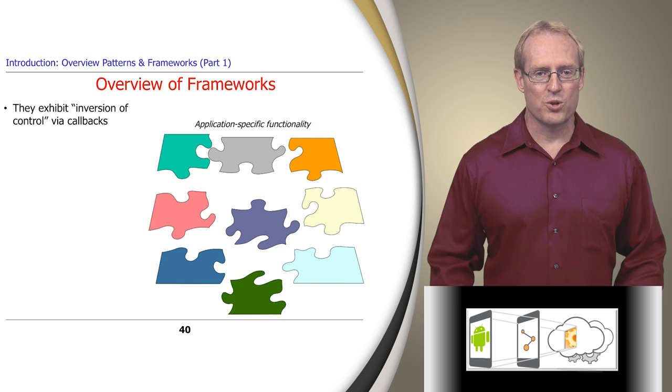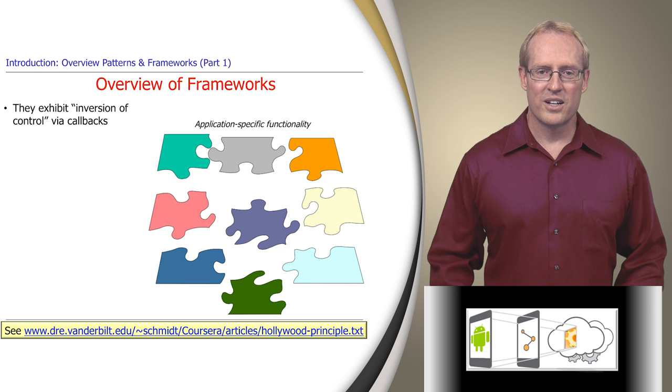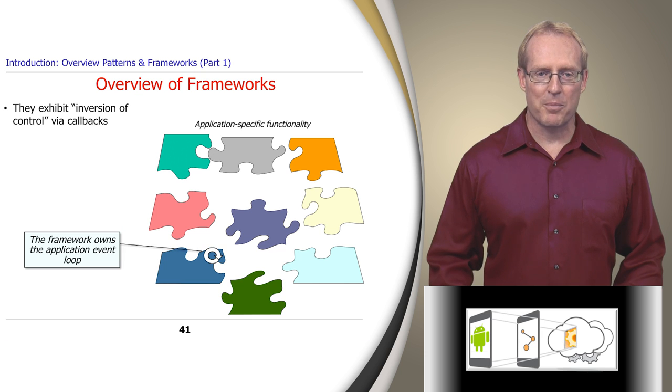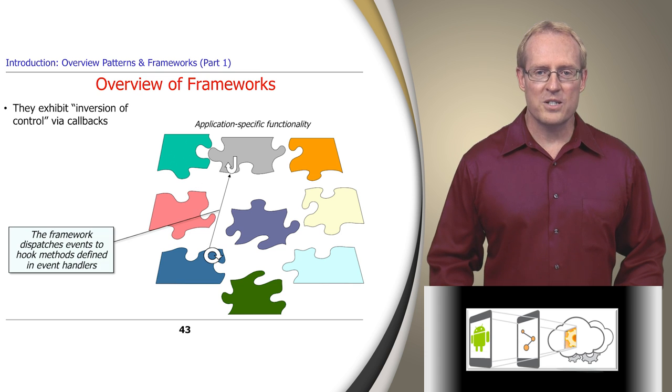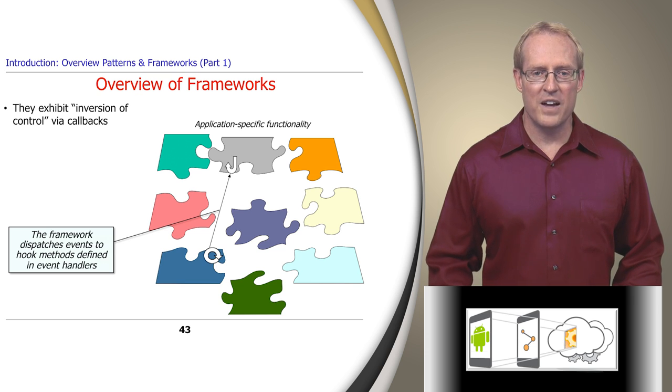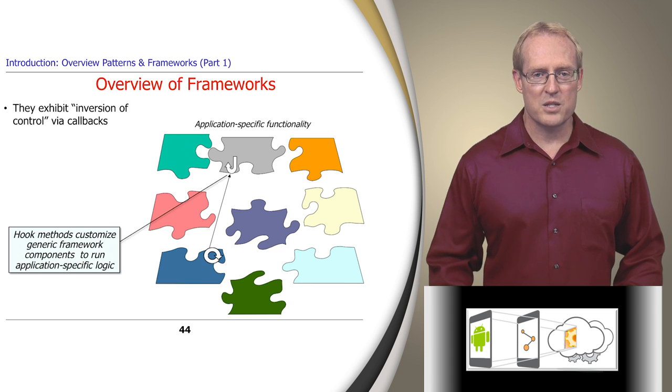First, they provide an inversion of control, also known as the Hollywood principle. Rather than having an application be self-directed, doing what it wants, when and how it wants, a framework owns the main application event loop. Applications register event handler objects with the framework. When events occur that an application has indicated an interest in, the framework is responsible for detecting what's happened and then demultiplexing and dispatching the events to hook methods defined in the registered application event handlers. A hook method is a specified point in a framework-based program where developers can customize generic framework components with callbacks that the framework invokes to run application-specific logic.